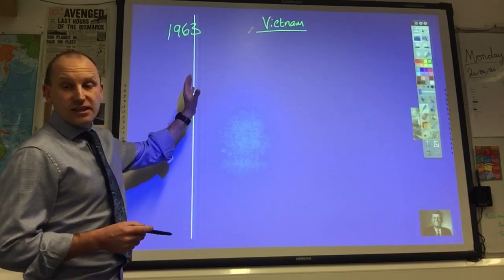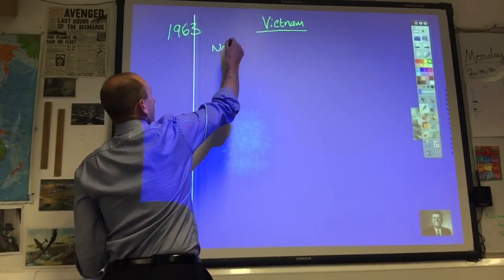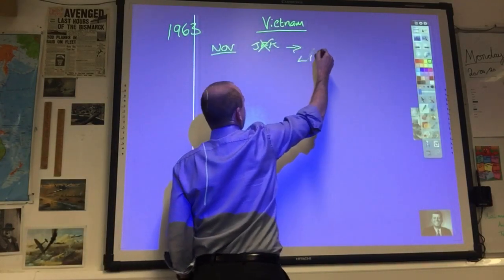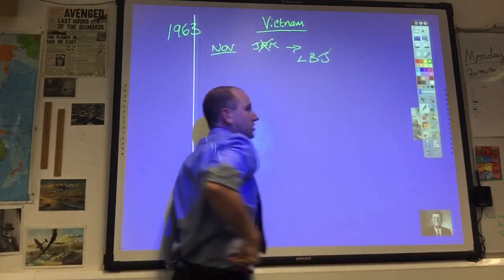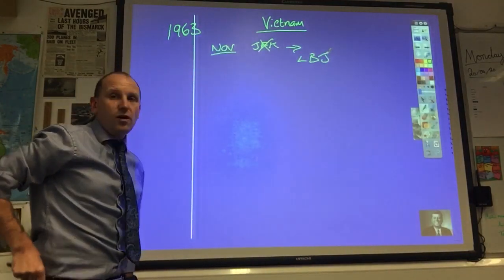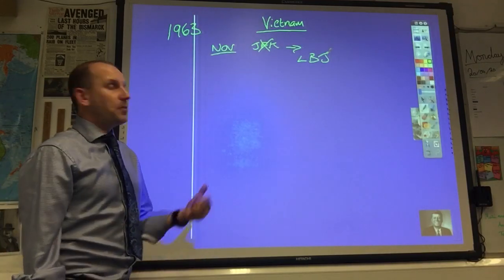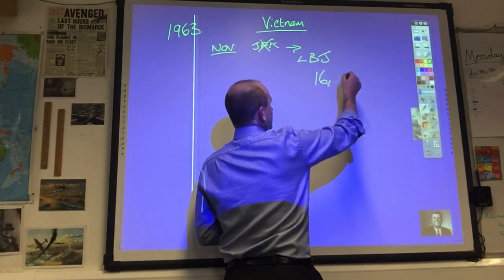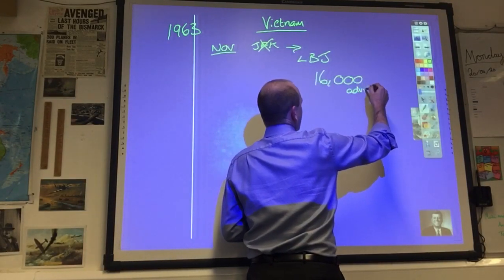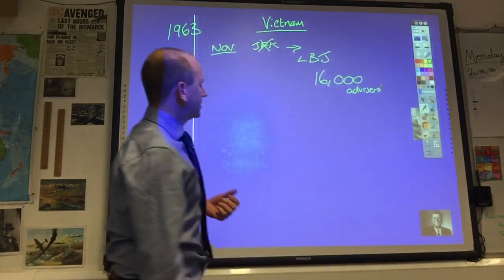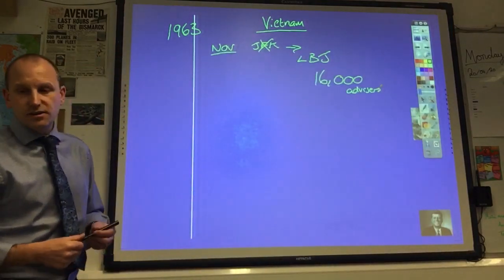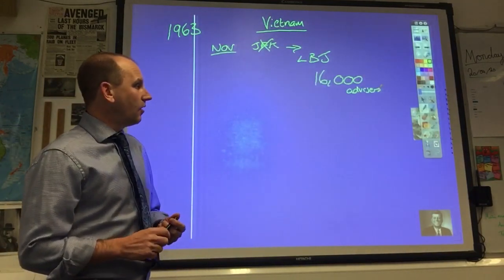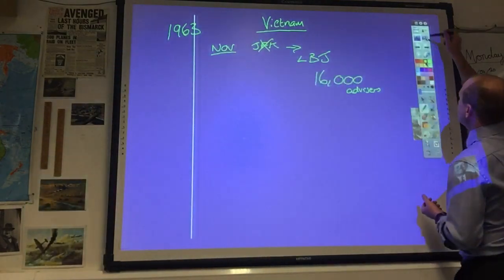So by the time you've got to 63, good times in the third form, you should remember the assassination of JFK brings in everyone's favorite Texan, Lyndon Baines Johnson, to the White House, sworn in on Air Force One. He inherits a policy of continuing escalation in Vietnam. There are 16,000 advisors in Vietnam by the time Kennedy is assassinated, trying to prop up the corrupt and unpopular regime of the leader of South Vietnam, Diem.